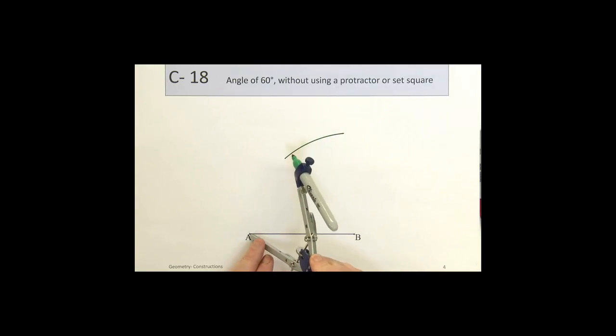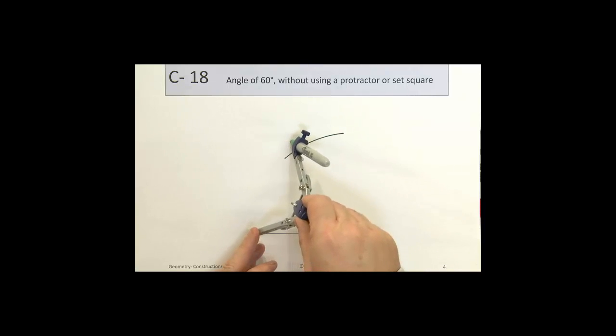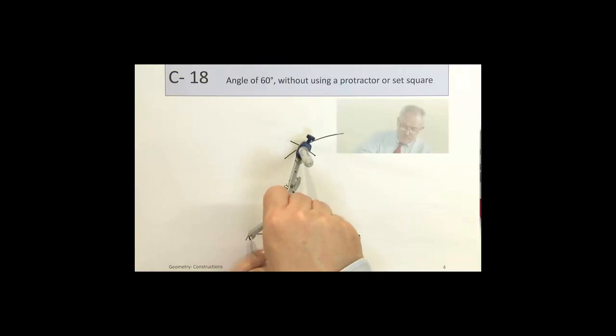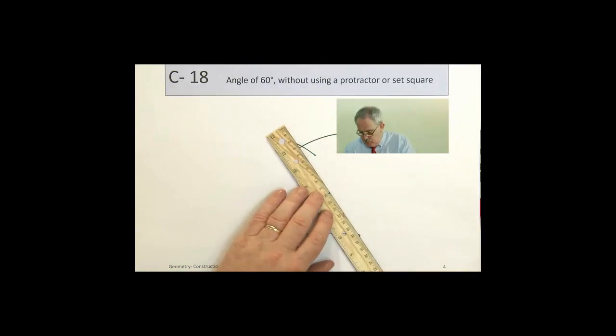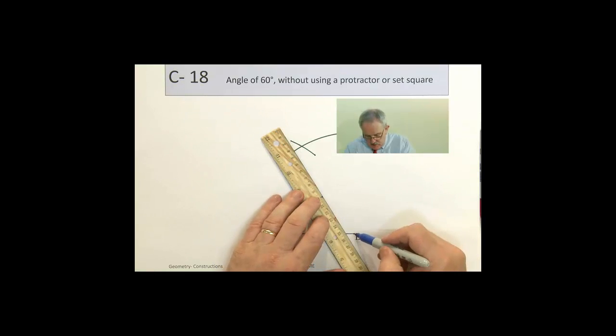Similarly, if we move to A and draw an arc there, every point here is the same distance from A as B is. We can now construct our triangle.